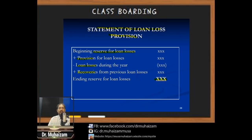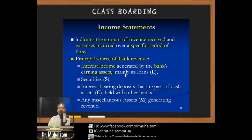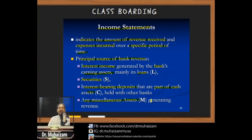The income statement indicates the amount of revenue received and expenses incurred over a specific period. The principal sources of bank revenue include interest income from earning assets — mainly loans — interest from purchased securities, interest paid on securities, income from interest-bearing deposits as part of cash assets, and miscellaneous revenue-generating assets.